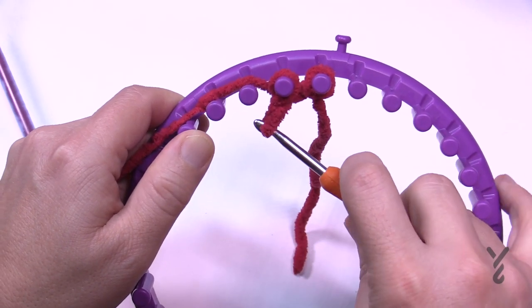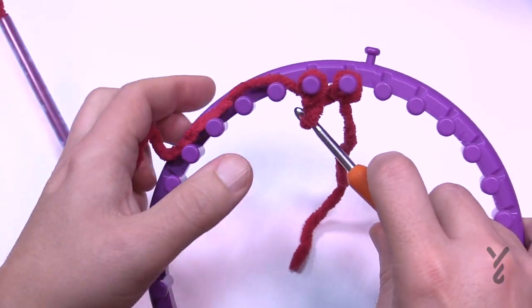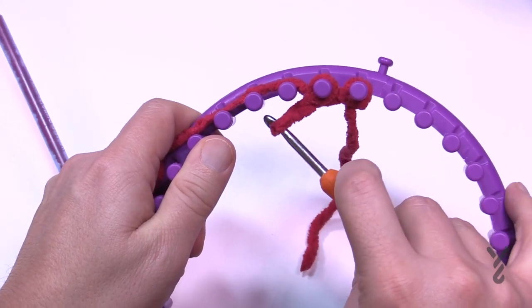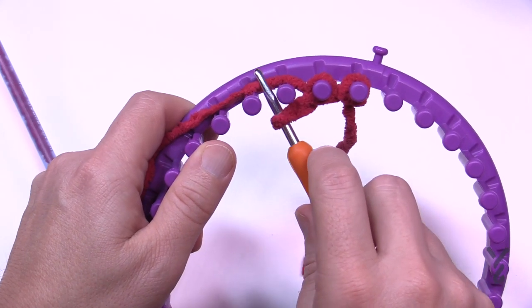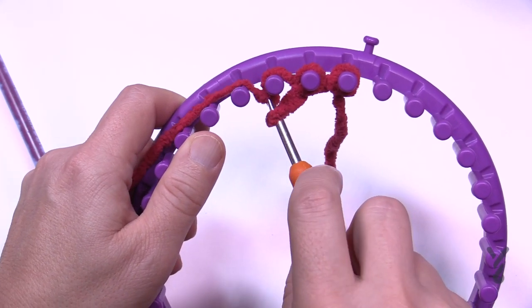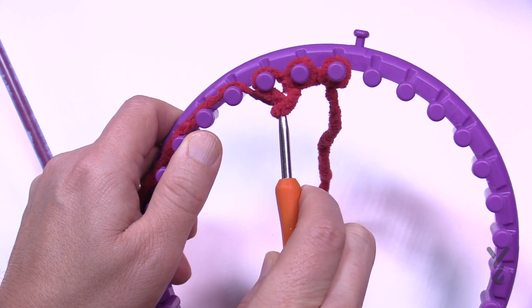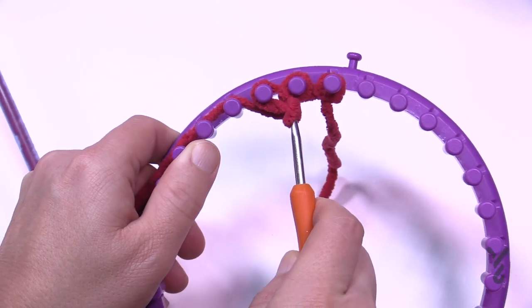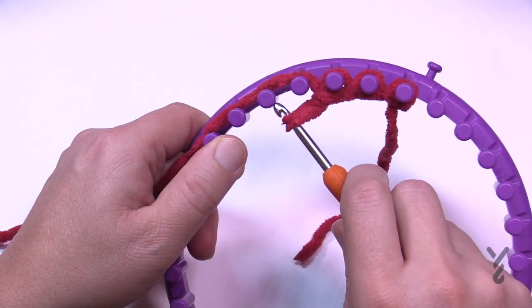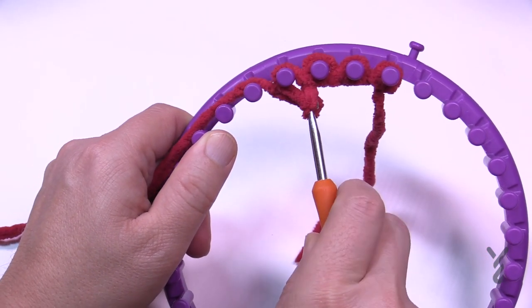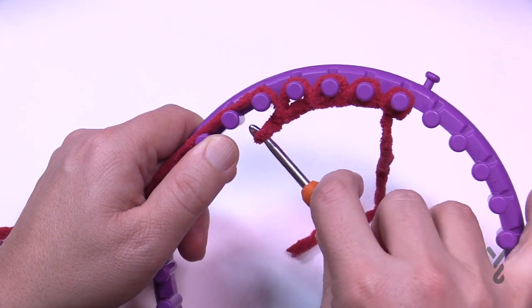Give yourself a little bit more slack, pull on it, and then go in between the next two. Just scoop and pull through and pull through that loop. If you don't provide enough slack it gets a little tough. Go in between the next one, scoop and pull through, and you can go all the way around the loom like this.